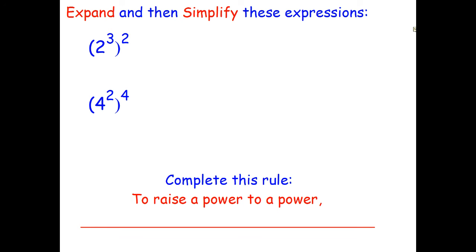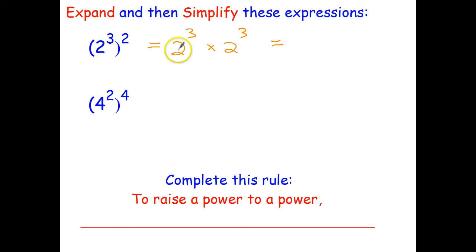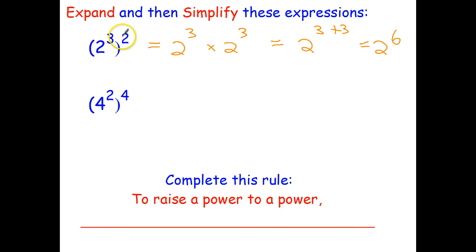We'll start by doing it the slow way by expanding it out and simplifying, and once we've done that we'll look for the shortcut, because the index laws are really just shortcuts to doing it the long way. So 2 to the power of 3 all squared means multiplying it by itself — that's 2 to the power of 3 by 2 to the power of 3. We can add the powers together and get 2 to the power of 6. So 2 cubed all squared simplifies to 2 to the power of 6.